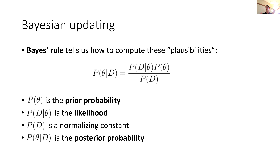At a high level, Bayesian inference works as follows: we start off with some prior belief about what we think are reasonable values for our model parameters, encoded in the prior probability term. We are then given data D and update our prior beliefs by multiplying the prior by the likelihood, which gives us the posterior distribution. The posterior tells us which parameter values are most plausible taking into account both prior knowledge and information contained in the data. This process is called Bayesian updating.